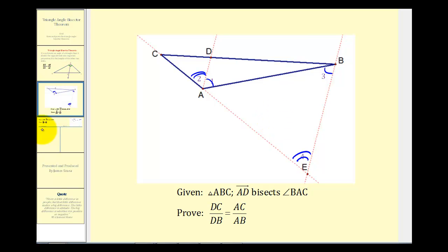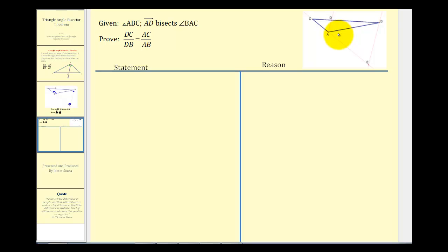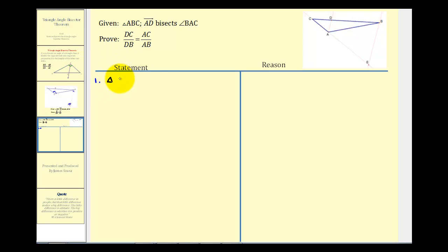Let's go ahead and write this up. We're given triangle ABC, where ray AD bisects angle BAC. We want to prove that the ratio of DC to DB is equal to the ratio of AC to AB. So we start by stating the given: triangle ABC, where ray AD bisects angle BAC.